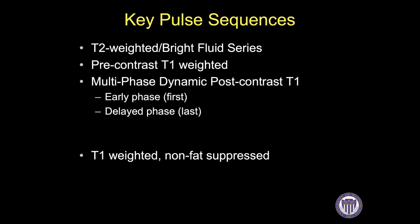For ACR breast MRI accreditation, we need at least four key sequences: a T2-weighted or bright fluid series, a pre-contrast T1-weighted series, and two post-contrast series. T1-weighted non-fat suppressed sequences are also helpful to evaluate for fat within lesions.